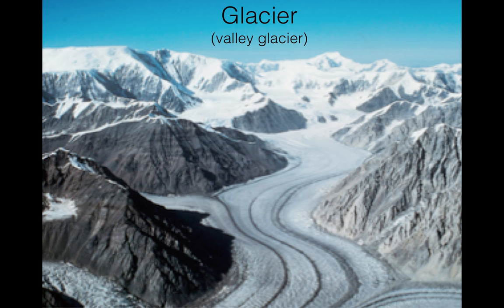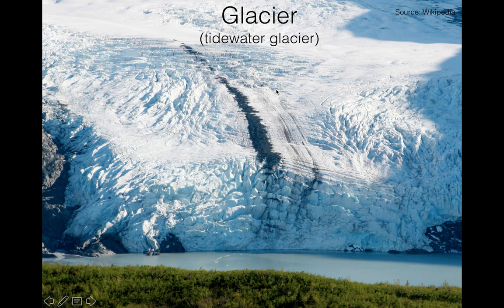Another aspect of the cryosphere is glaciers. Here there's a typical valley glacier that runs through mountainous areas, very typical of places like the Himalayan region and the Alps. There's also something called a tidewater glacier — glaciers that terminate in the ocean or a water body. We see a lot of these tidewater glaciers in parts of Alaska.